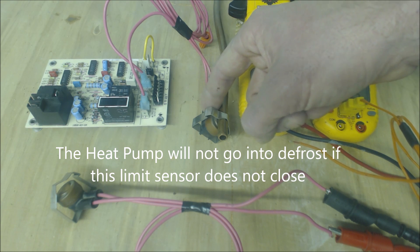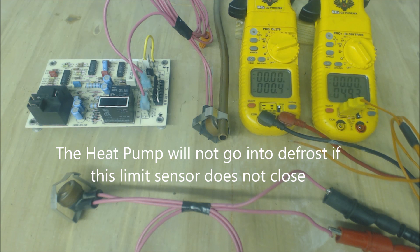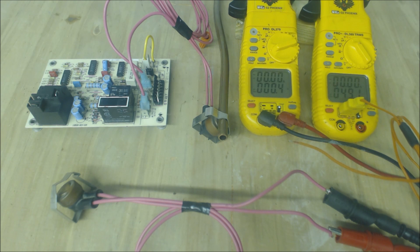So this sensor right here is a Sensata, clicks on heat pump defrost sensor. All right, the model number is 3MT01L and L means it opens on rise.